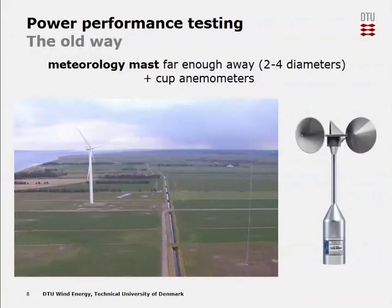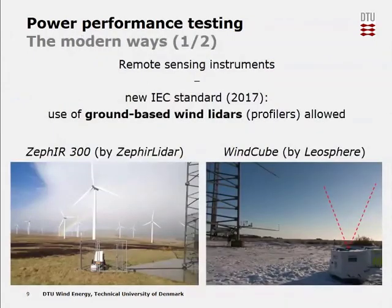The second goal of power performance testing is the assessment of power curve uncertainties — answering how far from the true power curve is the measured one. The true power curve is unmeasurable, but with uncertainty assessment we can say how much energy the turbine will produce with a certain probability. The old way is to use meteorology masts placed two to four rotor diameters from the turbine, with cup anemometers or sonic anemometers — classic anemometry techniques.